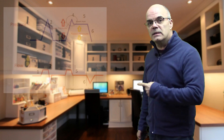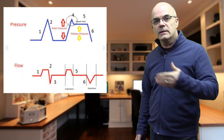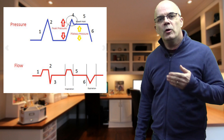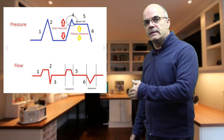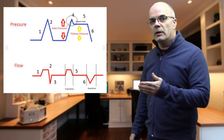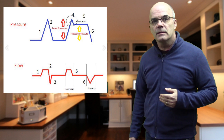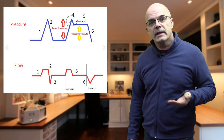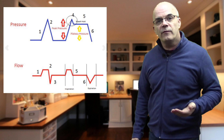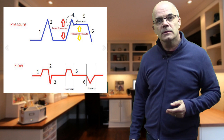Let's look at this diagram. Imagine we're ventilating the lung — we can see the pressure curve as we do so. At point one, we're ventilating the lung, the airway pressure goes up, and the volume also increases. At point two, during expiration, the pressure goes down and the flow moves in the opposite direction as the air moves out.